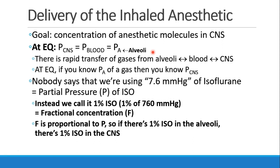Just a quick comment about nomenclature. People don't usually say, 'how much anesthesia were we using? 7.6 millimeters of mercury of isoflurane.' That's not how people talk. We don't talk about partial pressures of isoflurane. We usually talk about fractional concentration. So we say 1% iso — 1% of atmospheric pressure, 1% of 760, which is 7.6 millimeters of mercury.